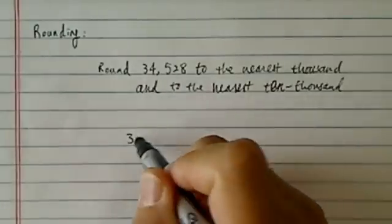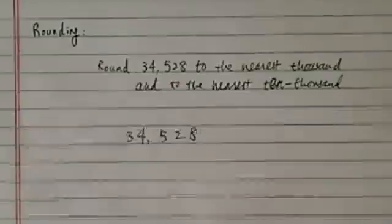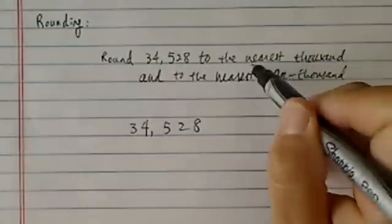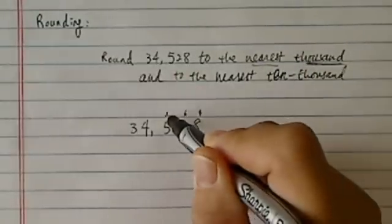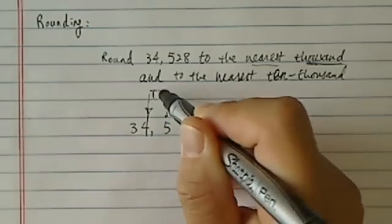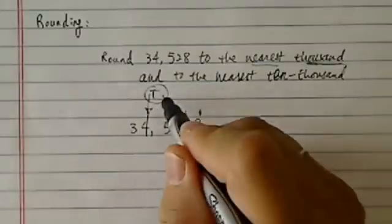So the thing to do when you're rounding is this: Write the number down. First of all, you got to find out where the nearest thousand place is. So this is singles, tens, hundreds. So here is where we need to round, the thousands.